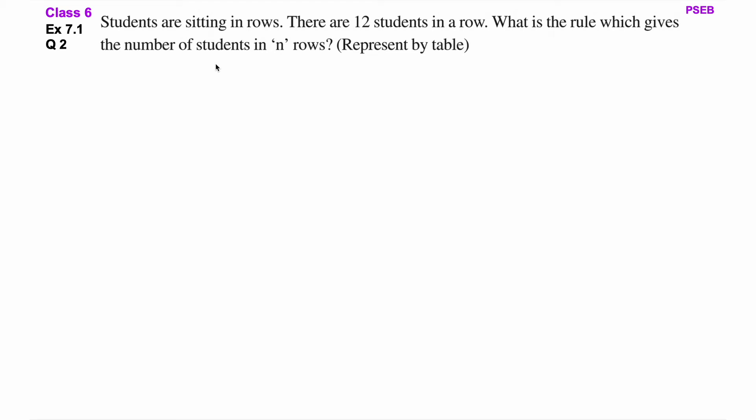Hello students, welcome back to this channel. In this video, we will solve question number 2 of exercise 7.1 from PSEB textbook class 6. Students are sitting in rows — students rows mein bathe huay hai. There are 12 students in a row — ek row mein 12 students hai.